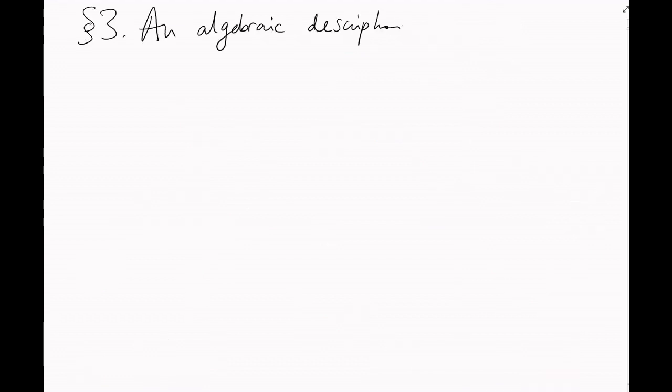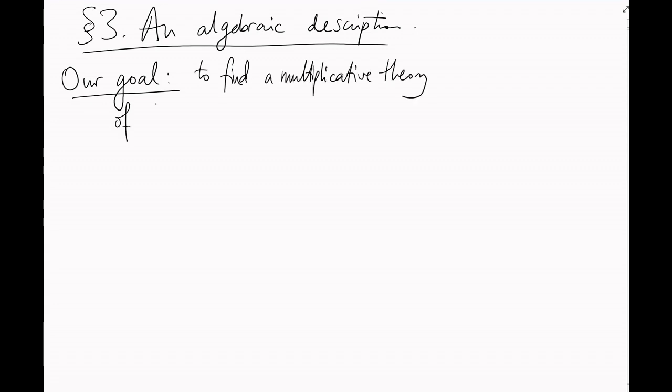Section 3, An algebraic description. All the way back in the first video, I gave a rough idea of our goal. That is, to describe a multiplicative theory of rings other than z.